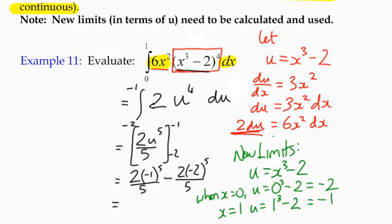Negative 1 to the power of 5 is negative 1. Multiplied by 2 is negative 2. So that first fraction is negative 2 fifths. Negative 2 to the power of 5 is negative 32. So multiplied by 2 is negative 64.